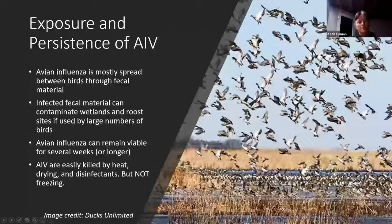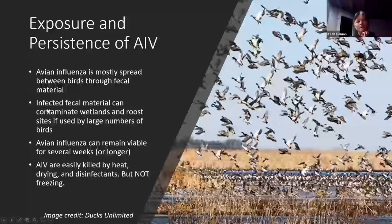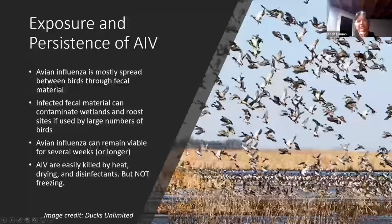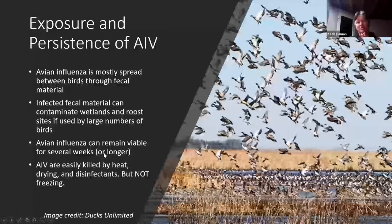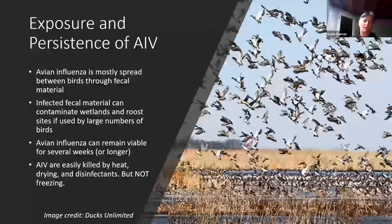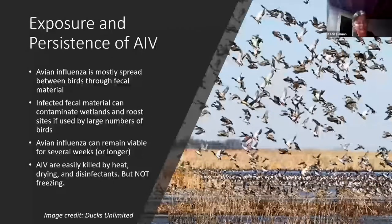The exposure and persistence of avian influenza is really spread through fecal material. Once that fecal material contaminates wetlands — especially in situations with thousands of waterfowl — the virus can live in those environments for several weeks or longer. Avian influenza viruses are easily killed by heat, drying, and disinfectants like bleach, which is effective against influenza viruses including avian influenza. However, freezing does not kill the virus — you can't just freeze a carcass and hope the virus gets killed.